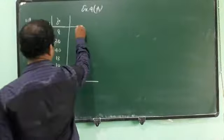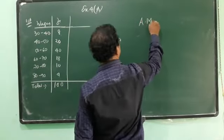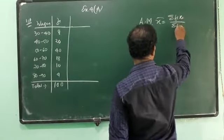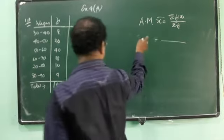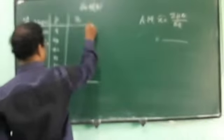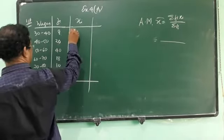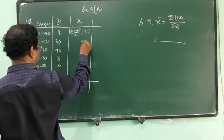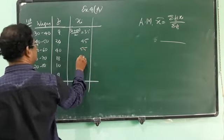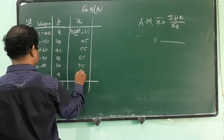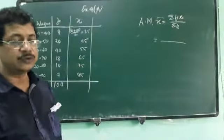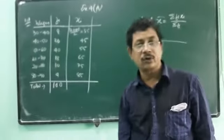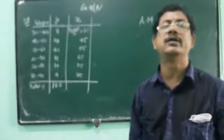Now we need, as it is the direct mean formula, x bar is equal to summation fi xi by summation fi. That means xi is needed. Xi is the middle of this range. So 30 plus 40 divided by 2 which is 35, then it is 45, then 55, then 65, then 75, then 85. You can use three different ways of doing this one.